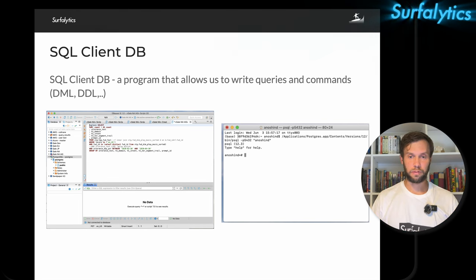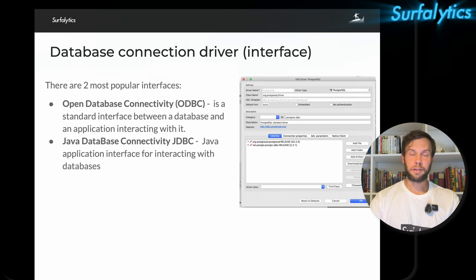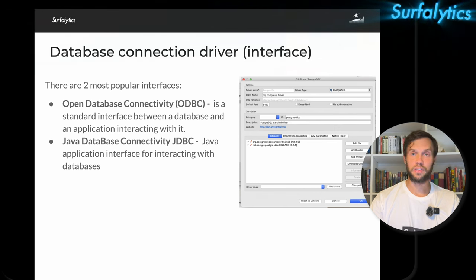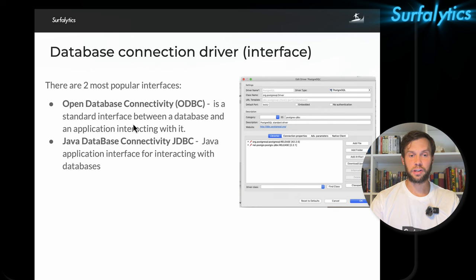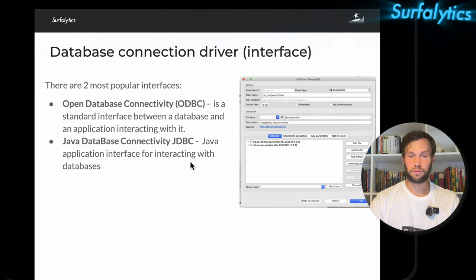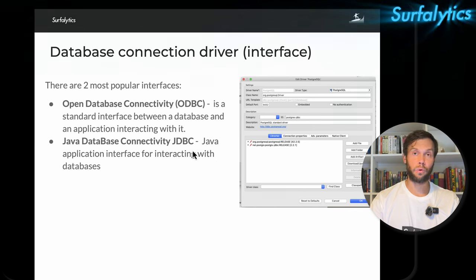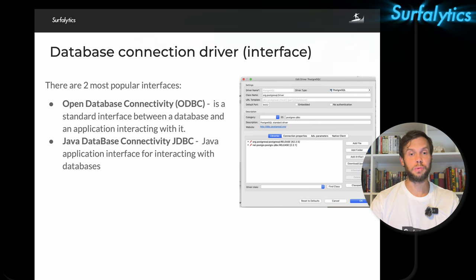On this screen we have the SQL client DBeaver and an example of CLI — I think it's for a Postgres application. We'll connect to the database in DBeaver using a JDBC driver connection. On non-Windows machines, or if the database doesn't support ODBC, you'll use JDBC. On Windows you can often use ODBC — Open Database Connectivity — a standard interface between database and application. JDBC stands for Java Database Connectivity, a Java application interface for interacting with databases.